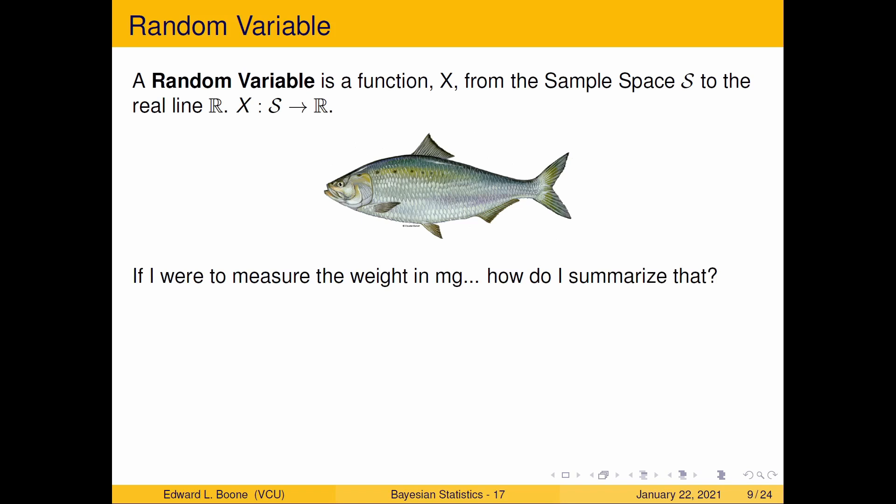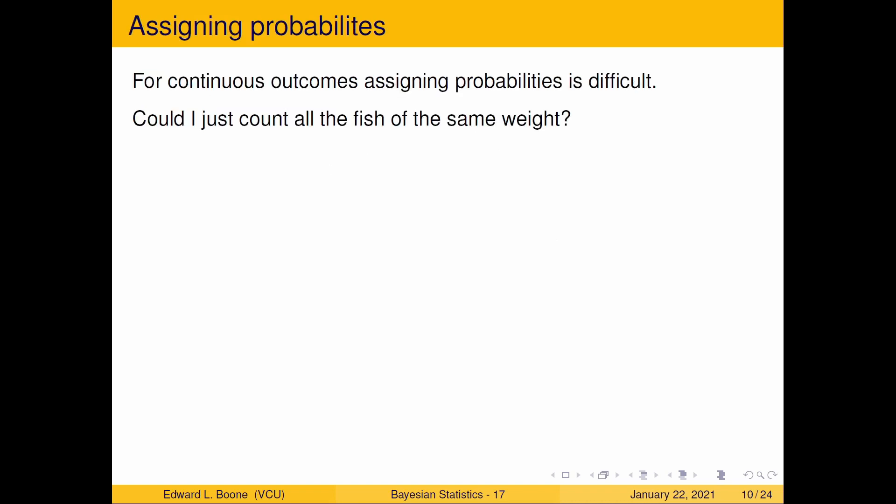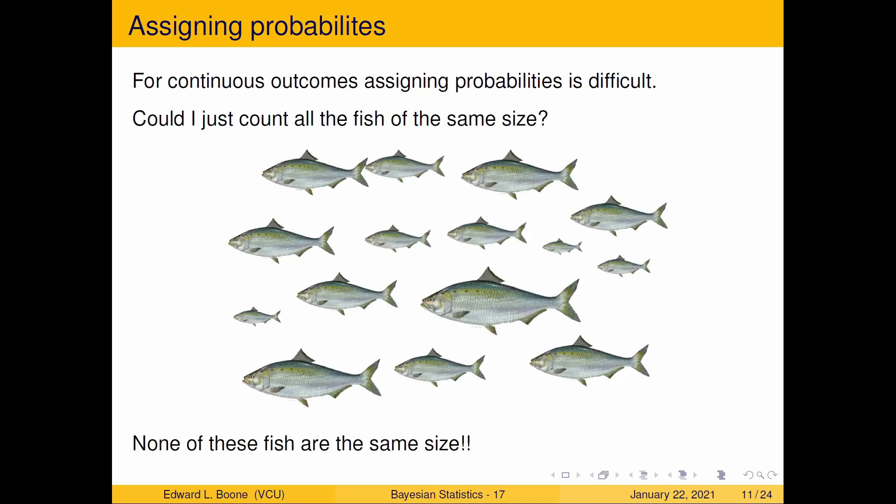I would need lots of fish and I'm just going to say continuous outcomes are kind of difficult. Could I just count all the fish of the same weight and kind of put them together? That would be one way of doing it. There's a problem though. If I catch a whole bunch of fish, look at this, none of those fish are the same size. In reality, I can't expect every single fish to be exactly the same size or even two of them to be the same size. So that's part of the problem.